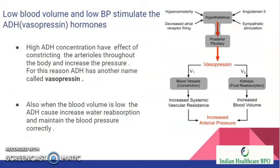Low blood volume and low blood pressure also stimulate ADH. High ADH concentration has the effect of constricting arterioles throughout the body and increasing blood pressure. For this reason, ADH has another name called vasopressin. When blood volume is low, ADH causes increased water reabsorption, which helps maintain blood pressure.